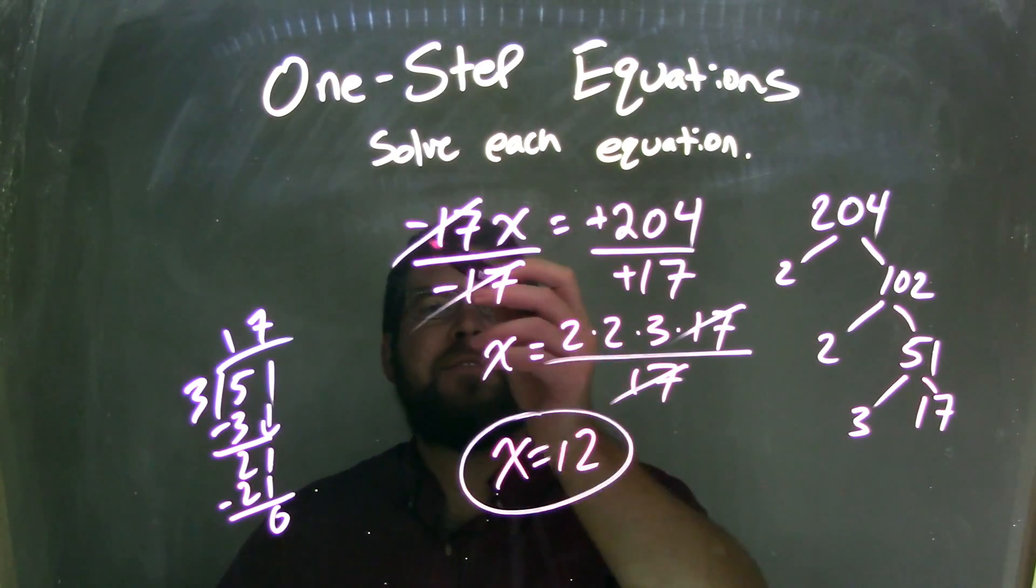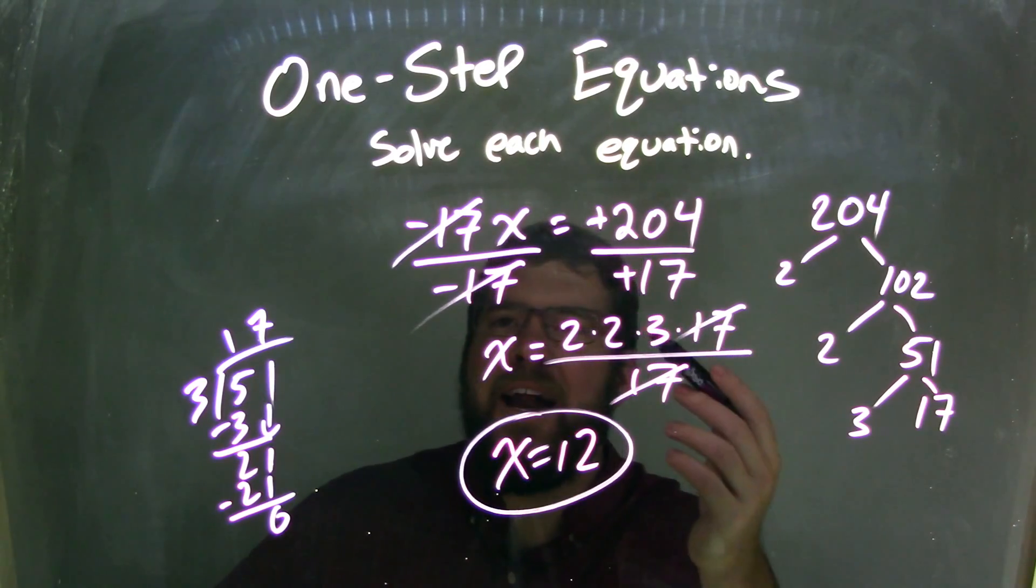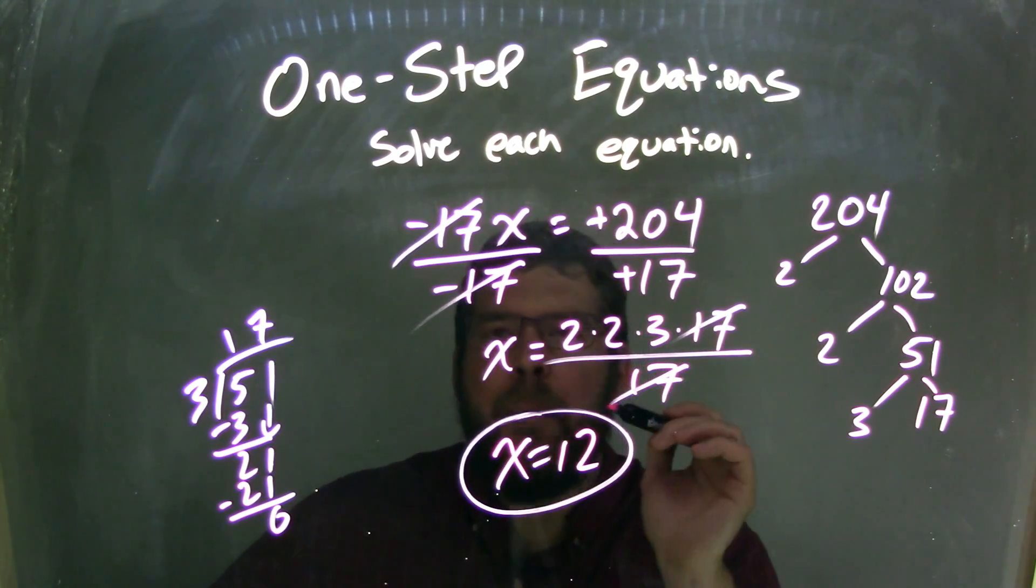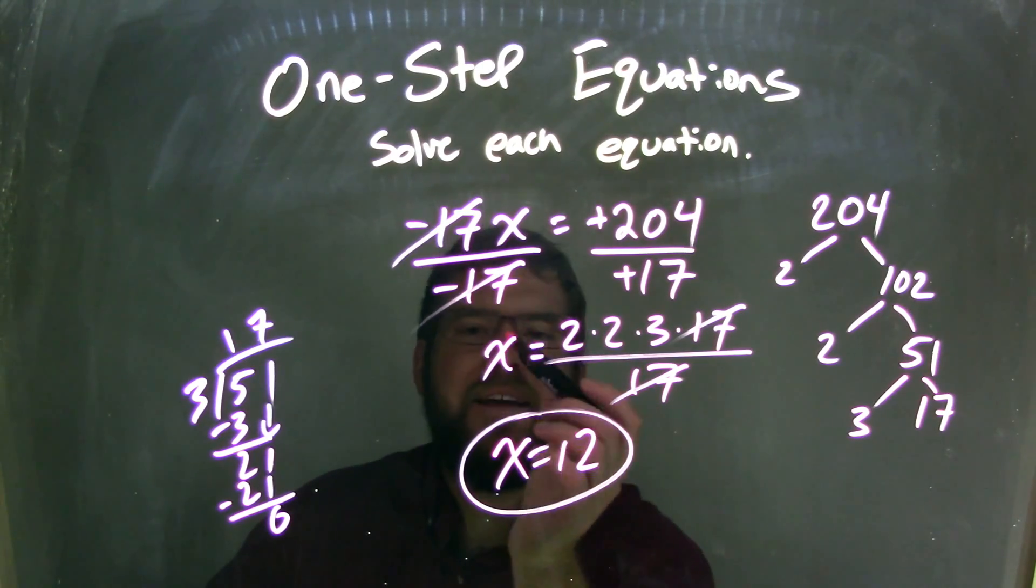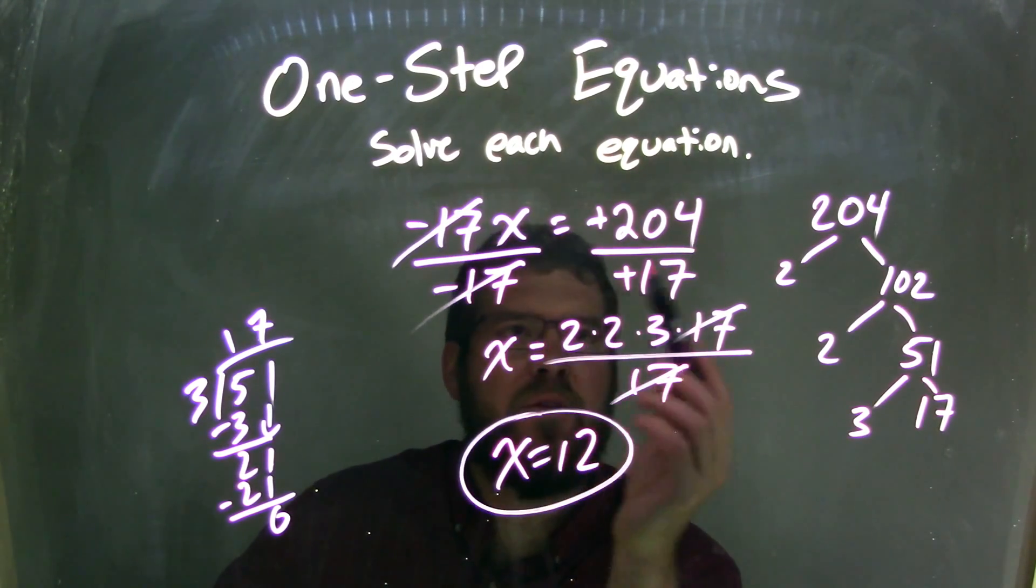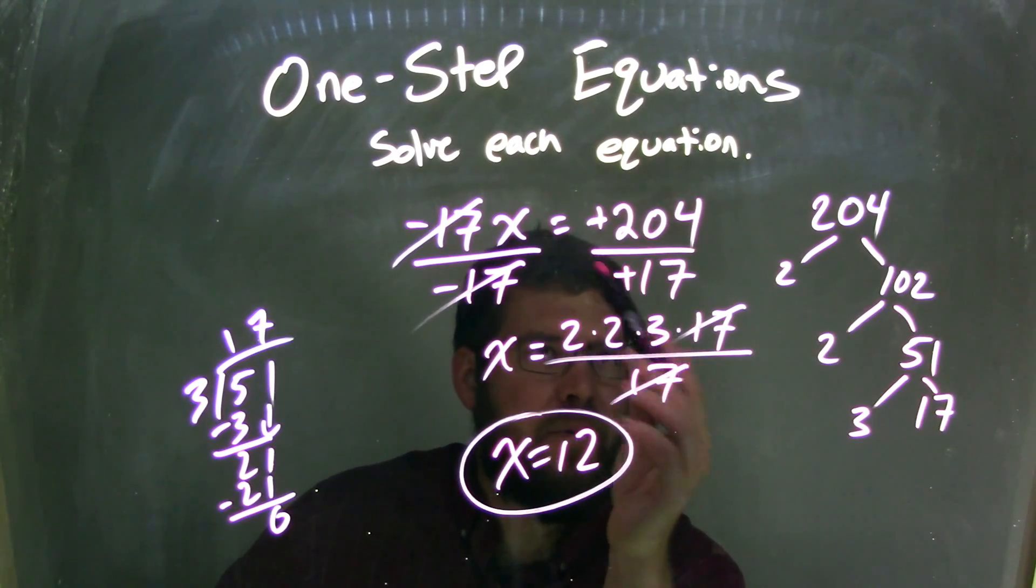So let's recap. We start with negative 17x equals negative 204. I divided by negative 17 on both sides, the opposite of multiplication. And what we have left here, on the left side, is just x. The negative 17s cancel. On the right, I knew that two negatives, a negative divided by a negative is a positive, so I wrote that there.